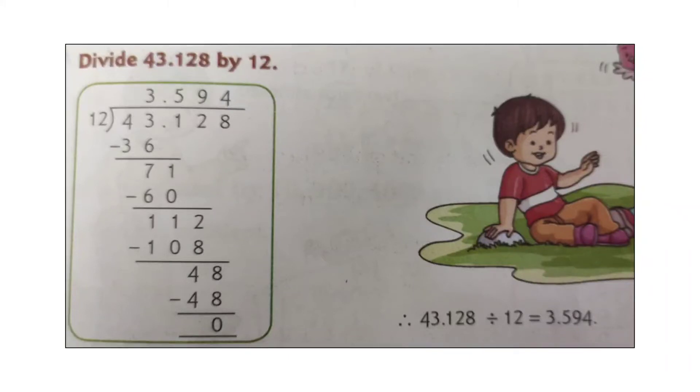112 minus 108 is 4. Bring down 8. 12 fours are 48. In the question, there are 3 digits after the decimal. Therefore, in the answer, there will be 3 digits after the decimal. Therefore, 43.128 divided by 12 equals 3.594.